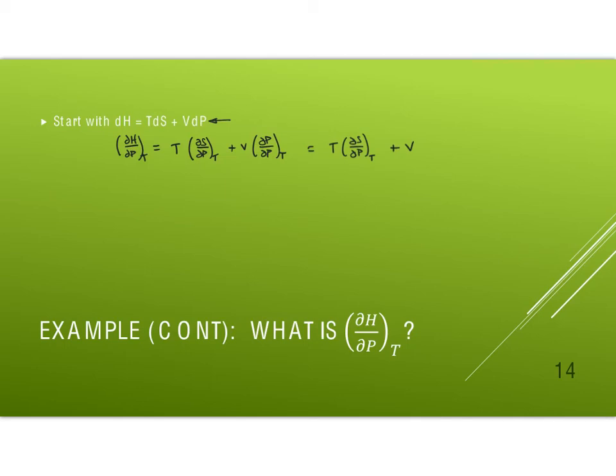Well, go back and look through your list of Maxwells. And sure enough, we have one that says that dS/dP at constant temperature is negative dV/dT at constant pressure. That's one of my Maxwells. So therefore, dH/dP at constant temperature is negative T dV/dT at constant pressure, plus the volume. So now, everything here is in terms of things that are measurable.